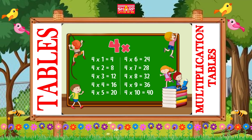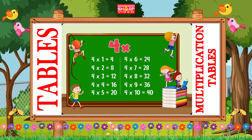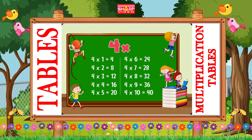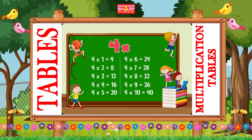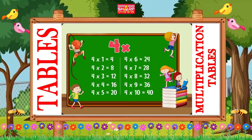Four fives are twenty, four sixes are twenty-four, four sevens are twenty-eight, four eights are thirty-two, four nines are thirty-six.